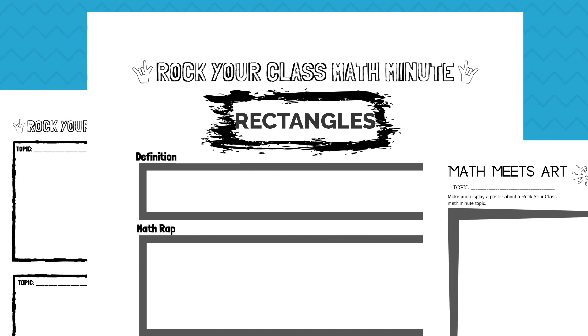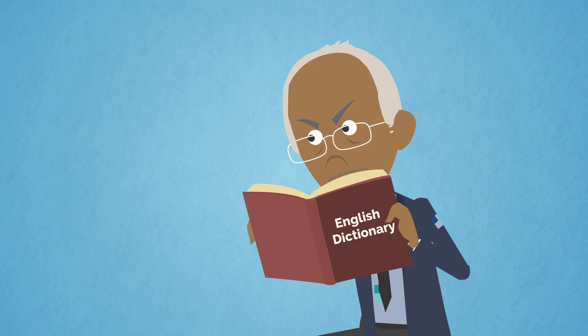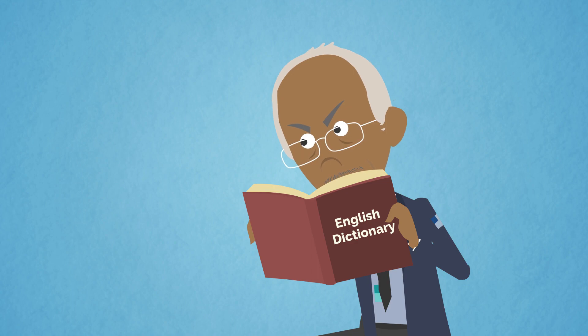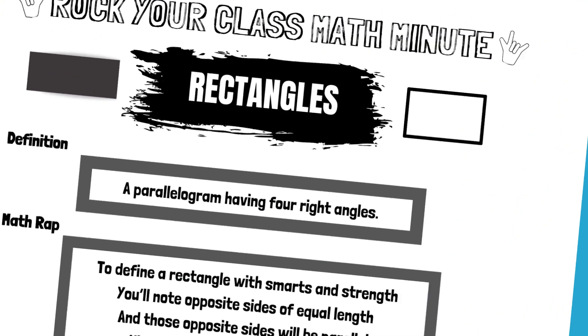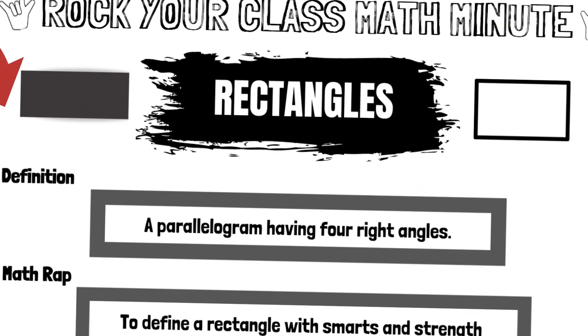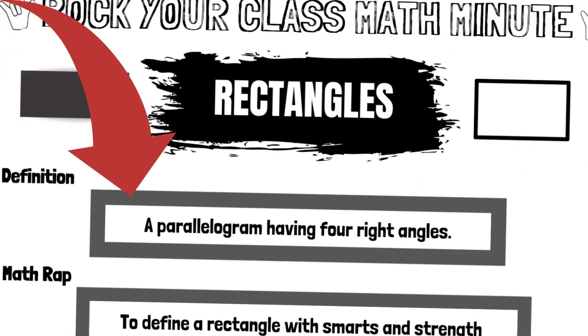Rectangles. What does the dictionary say? A parallelogram having four right angles.